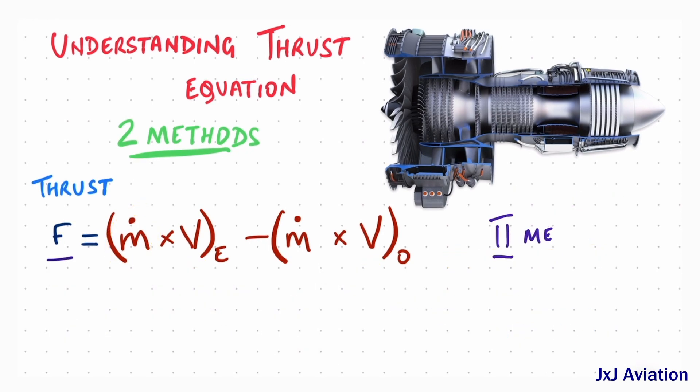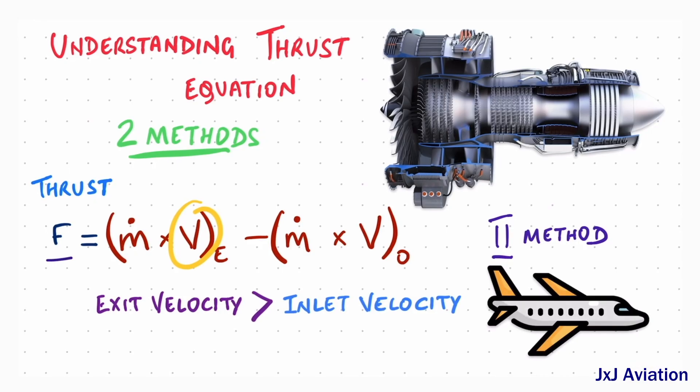The second method of increasing the thrust is to increase the air velocity. This is done by making the exit velocity of the air much greater than the inlet velocity. This concept is applicable in turbojet engines, where a small quantity of air is accelerated to a very high velocity when compared to the inlet air velocity.